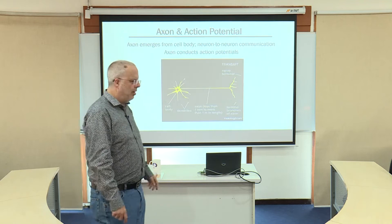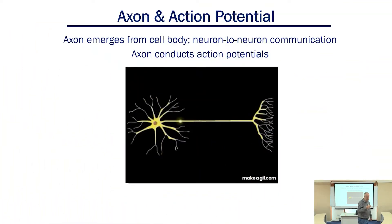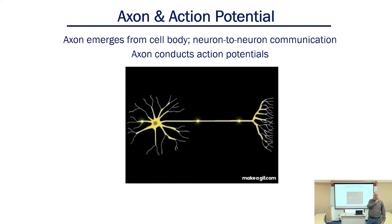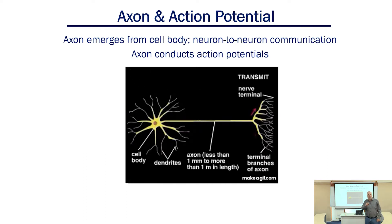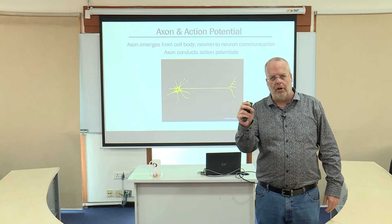So today I really want to talk to you about action potentials. As we've talked about multiple times, action potentials are how neurons communicate from one neuron to another. Action potentials travel down an axon, and at the end of that axon we have terminals, and that allows for this electrical signal — the action potential — to be converted into a chemical signal, i.e. the release of neurotransmitter.